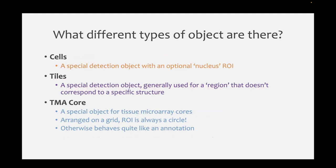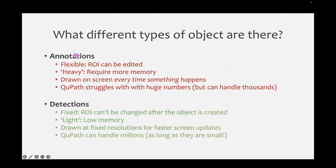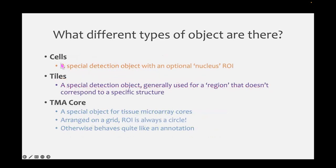There are some special types. Cells are a special subtype of detections, where you can have a nucleus as well as a main boundary, but it's just a detection. Tiles - we'll see them a little bit tomorrow - they're also just detections, but they might be used like if you want to calculate textures across a large region and break it into little squares, where each little square doesn't correspond to a meaningful entity like a cell or a gland or a vessel - it's just an arbitrary region. TMA cores are for tissue microarrays - they behave a bit like annotations, but tissue microarrays force you to have a grid and the cores should be circled. The main things you need to worry about are annotations and detections, and cells and tiles are just special examples of detections.